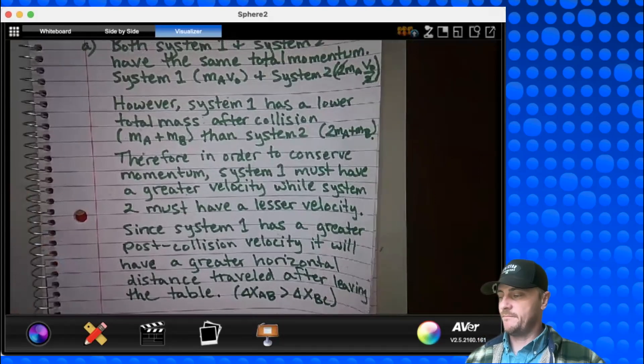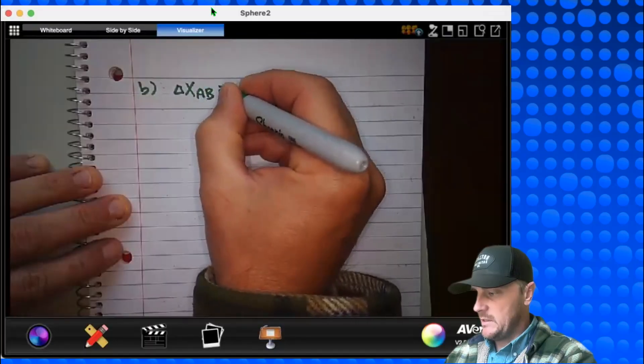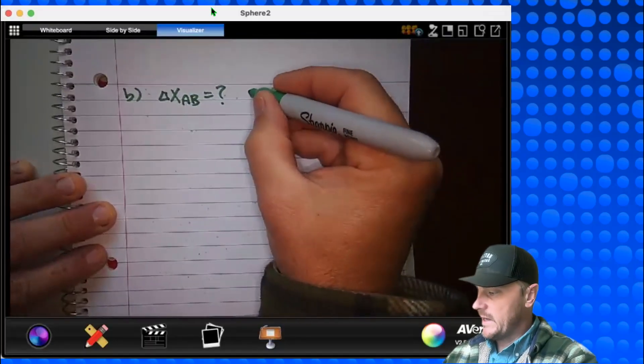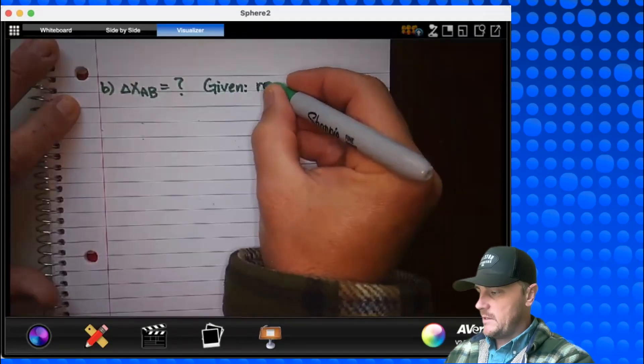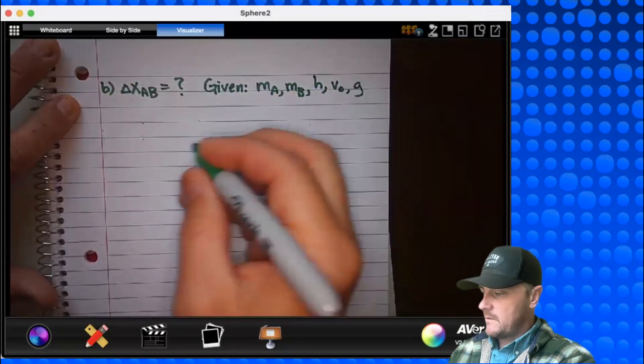Let's move on to part B. Starting with the conservation of momentum, derive an expression for delta XAB in terms of MA, MB, V0, H, and physical constants as appropriate. Assume that the time during which the blocks were only partially beyond the table's edge and still primarily on the table is negligible. Basically, they want us to find out what's this delta XAB in terms of all those ideas. Delta XAB equals, I don't know, but I've got to find it. And we have given to us MA, MB, H, and V0. And we can use G, of course.